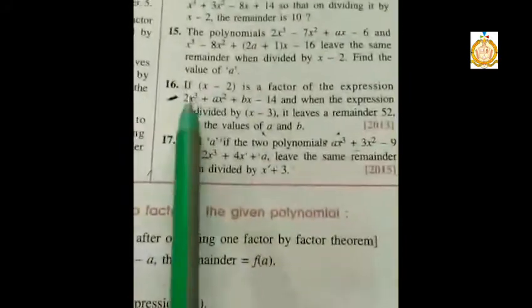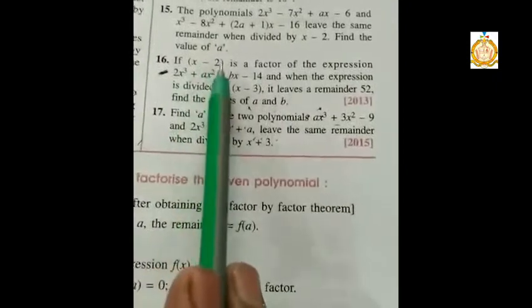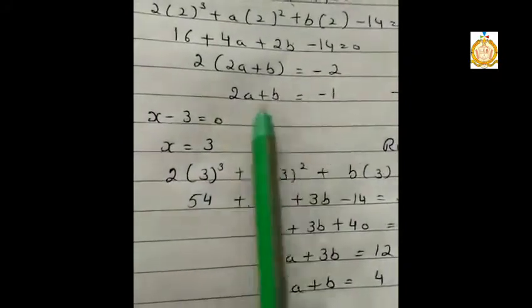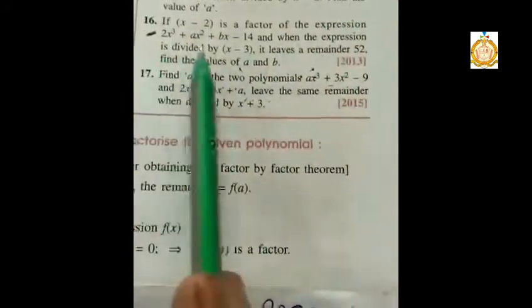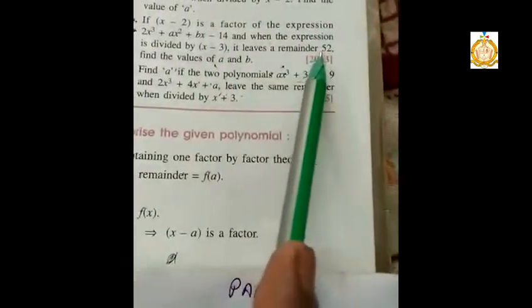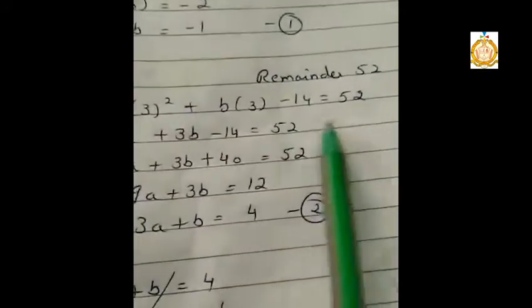In the next concept, in sum 16, x minus 2 is a factor, so the remainder will be 0 and x equals 2. I keep this x value and put it into the given expression. Because a and b are two variables, I let that equation be number 1. Then it says: when the expression is divided by x minus 3, that means x becomes positive 3, and it leaves remainder 52. Since the remainder is 52 and not 0, I put x as 3 and set the expression equal to 52, not 0. That gives another equation.